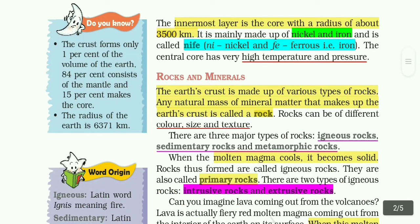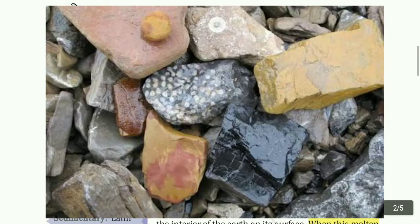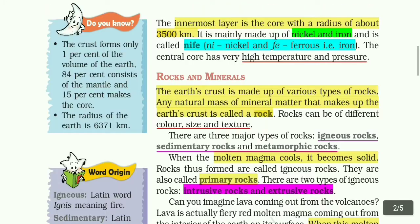Then rocks and minerals - the earth's crust is made up of various types of rocks. Any natural mass of mineral matter that makes up the earth's crust is called rocks. Rocks can be of different colors, sizes, and textures. The earth's crust is made up of rocks, and minerals are made up of rocks.